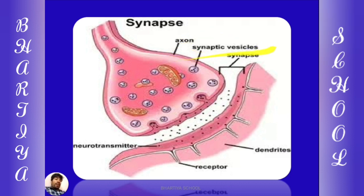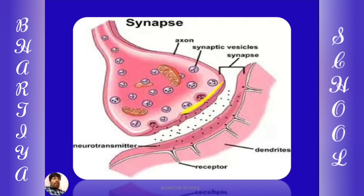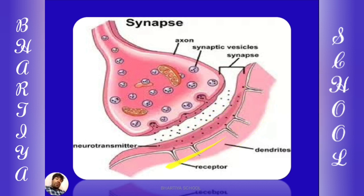Acetylcholine एक chemical substance है जो nerve impulse को एक neuron से दूसरे neuron में travel करने में help करता है। ये small vesicles nerve ending के membrane के साथ fuse होके neurotransmitter यानि acetylcholine को release कर देती हैं। Dendrite के पास receptors present होते हैं जो इस chemical impulse को receive करते हैं, इस तरह से impulse axon से dendrite में convert और transfer हो जाता है।